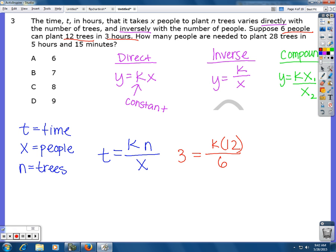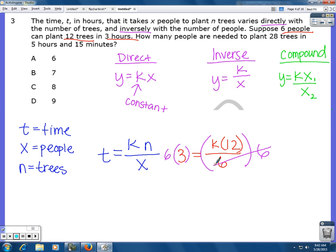So first I'm going to multiply both sides by six. It's going to cancel out there. And I'm going to get 18 equals 12k. Divide by 12 on both sides. And k is going to equal 18 over 2, which simplifies to 3 over 2, which is 1.5.